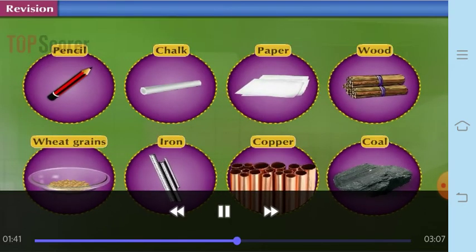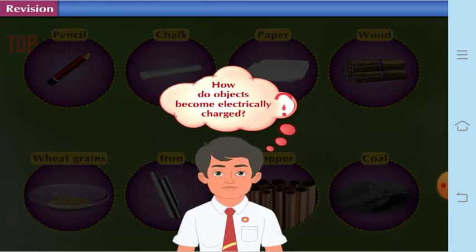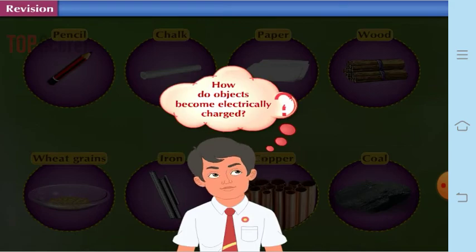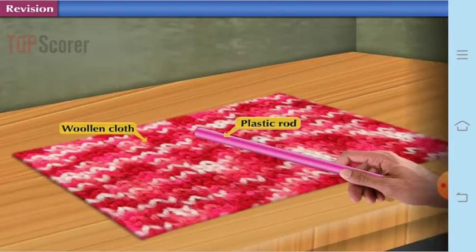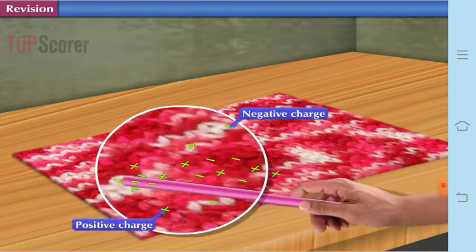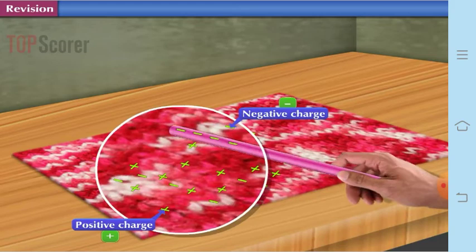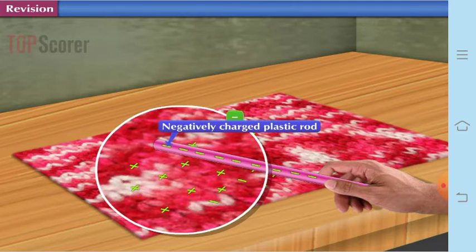Then why are they said to be charged or how do objects become electrically charged? It is because if the balance of electrically neutral atoms gets disturbed, then the objects become charged. Like for example, if we rub a rod against the woolen cloth, you will find that the one which is rubbing becomes negatively charged or the negative charges are flowing from the one which is getting rubbed.